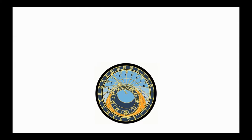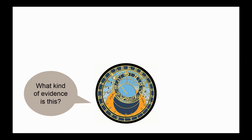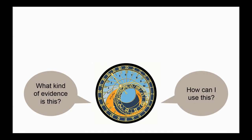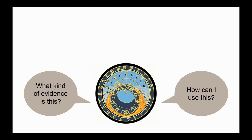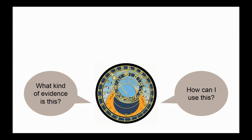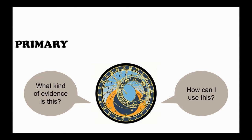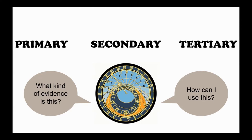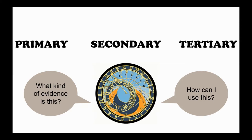When information is created is important because it affects the kind of evidence it contains and the way you can use it. In this sense, information is usually referred to as primary, secondary, or tertiary. Let's talk about what those mean.